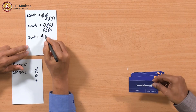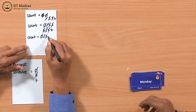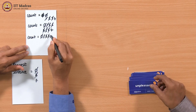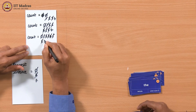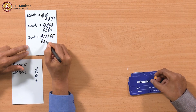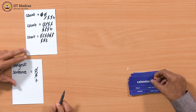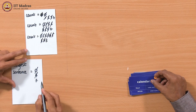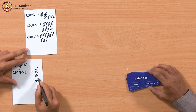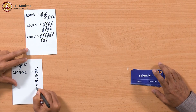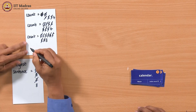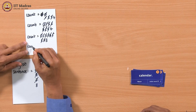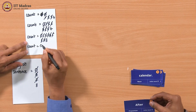We start again: 1, 2, 3, 4, 5, 6, 7, 8 — this one has a full stop, so eight words. We got a slightly longer sentence. We replace seven by eight. And again we reset count to 0.